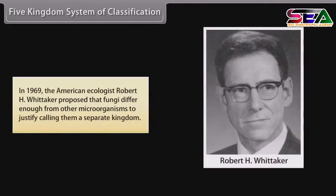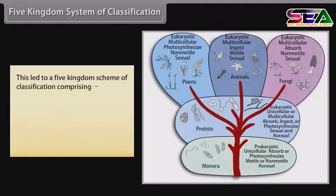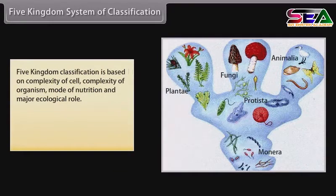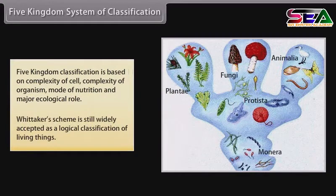Five Kingdom System of Classification. In 1969, the American ecologist Robert H. Whittaker proposed that fungi differ enough from other microorganisms to justify calling them a separate kingdom. This led to a Five Kingdom Scheme of Classification comprising Monera, Protista, Fungi, Plantae, and Animalia. Five Kingdom Classification is based on complexity of cell, complexity of organism, mode of nutrition, and major ecological role. Whittaker's scheme is still widely accepted as a logical classification of living things.